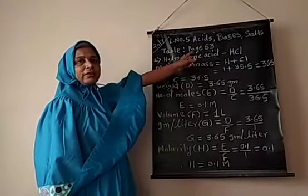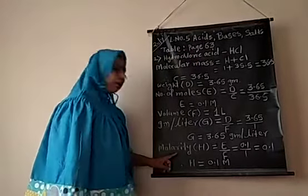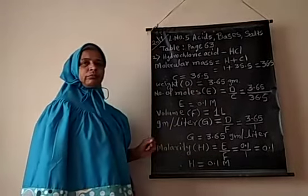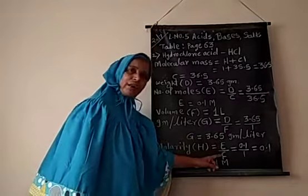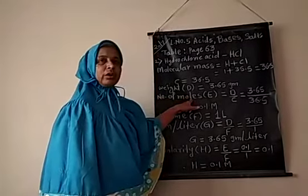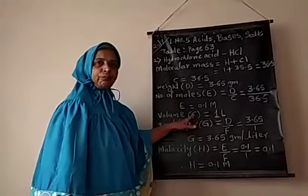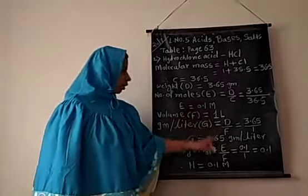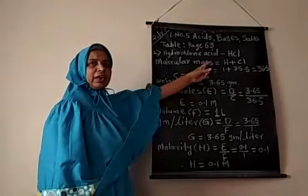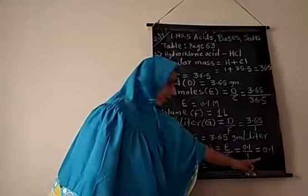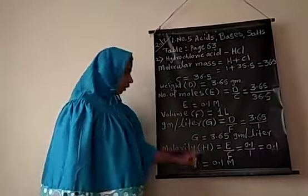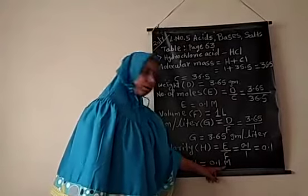Now we calculate the molarity of hydrochloric acid. The molarity formula is number of moles divided by volume. In the table this is given as E divided by S. Number of moles we calculated as 0.1, and the volume of the solution is 1 liter. So 0.1 divided by 1 equals 0.1. Therefore, the molarity of hydrochloric acid is 0.1 M.